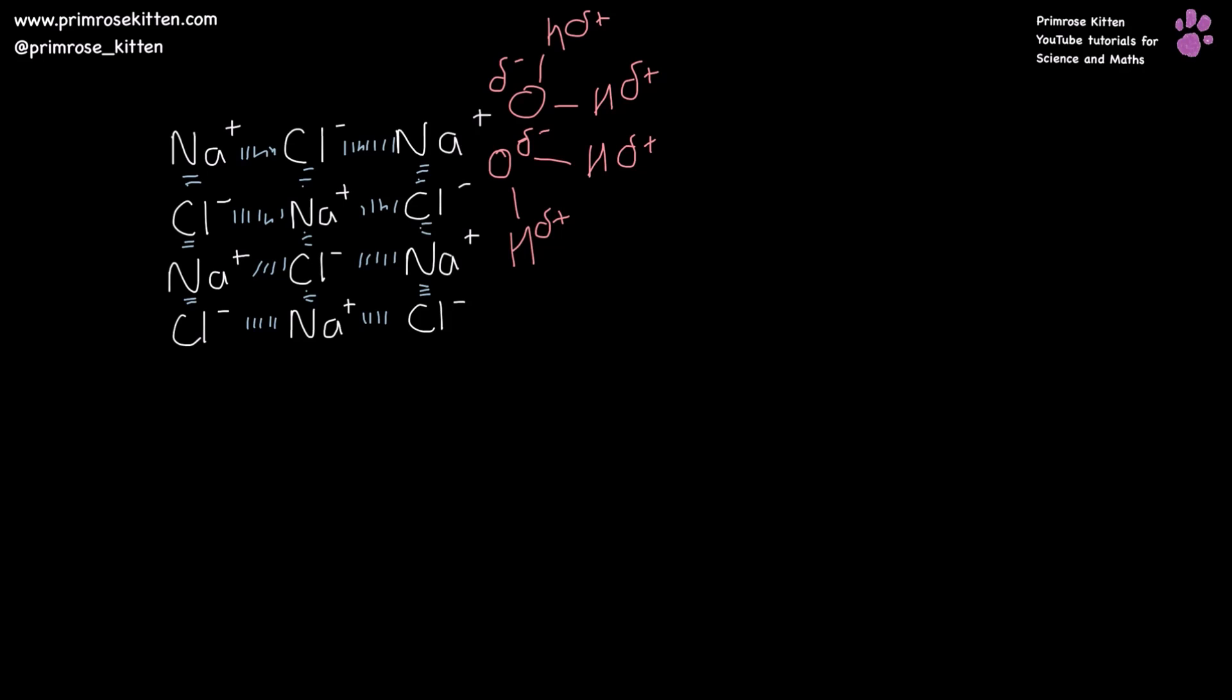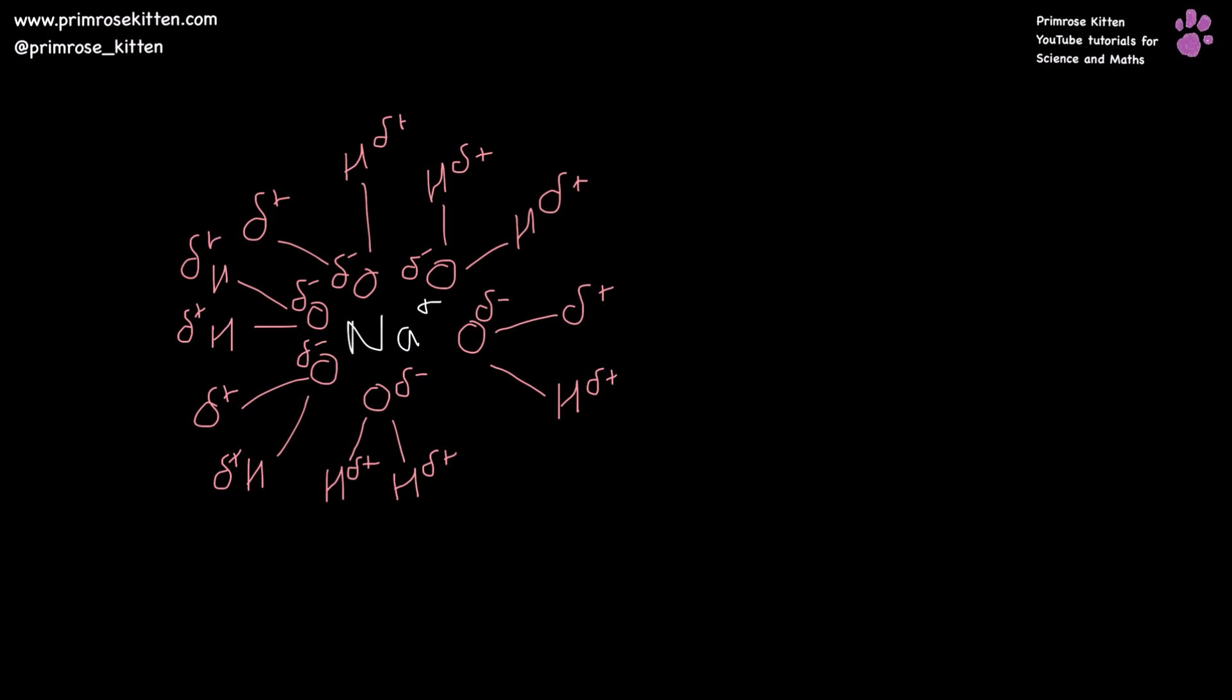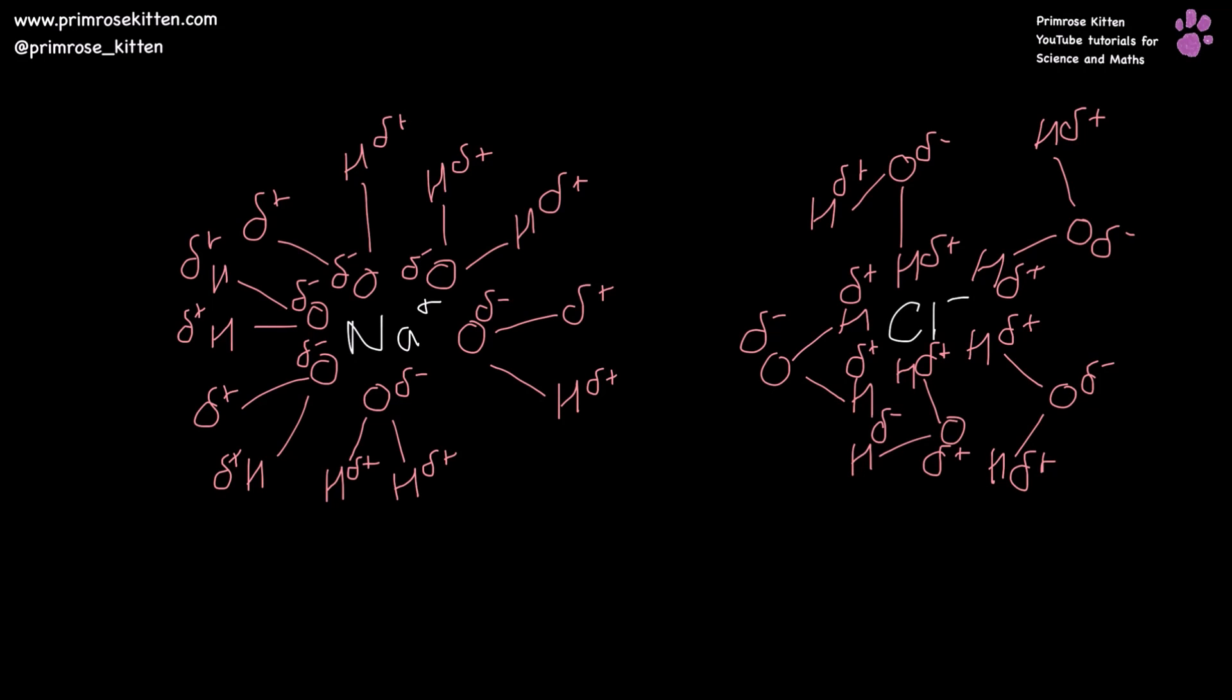The lattice is going to get disrupted and the ions are going to be pulled out of it by the slight charges on whatever polar substance it might be. It could be water, it could be something else. So you're going to get each positive ion from the lattice surrounded by the negative end of the polar molecule and each negative ion within the lattice surrounded by the delta positive end of the polar molecule.